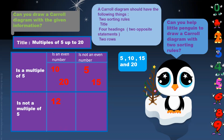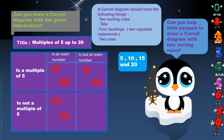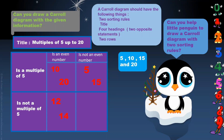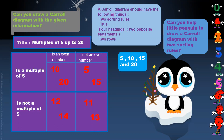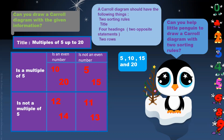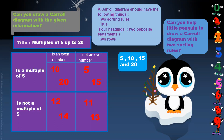5 and 15 are not even numbers — they are multiples of 5. 12 and 14 are not multiples of 5. 11 and 13 are not multiples of 5 up to 20 and they are not even numbers.